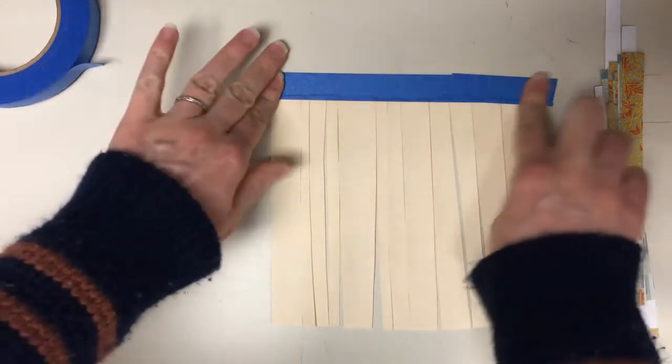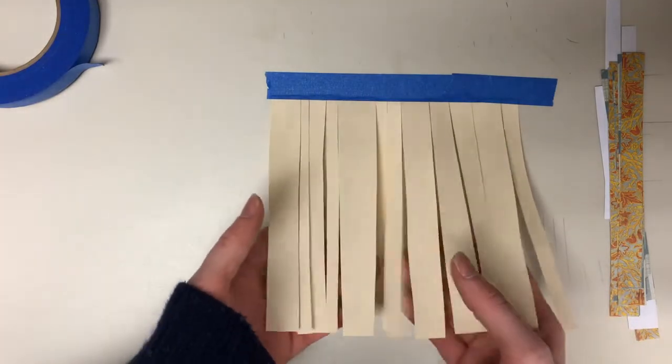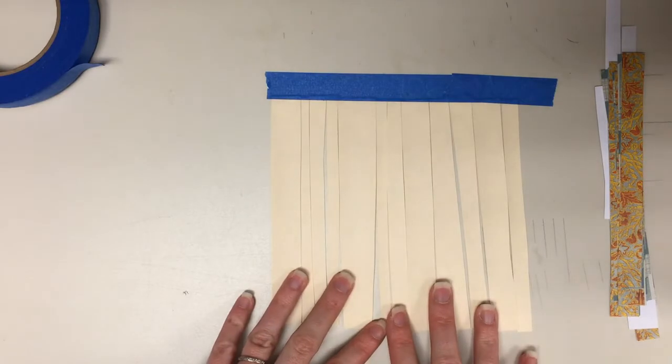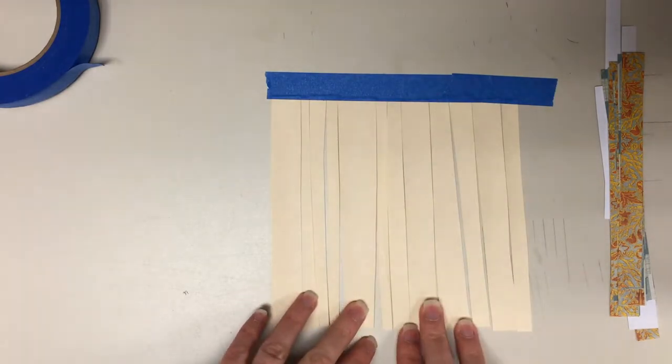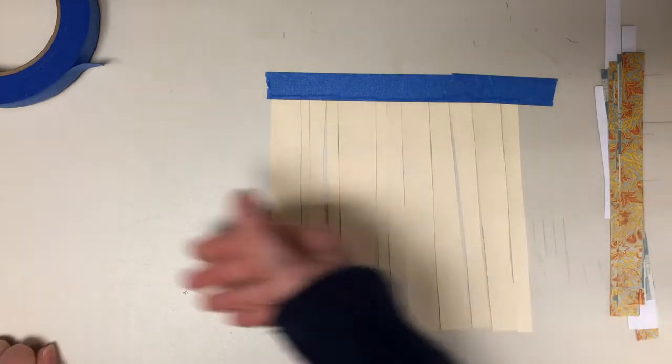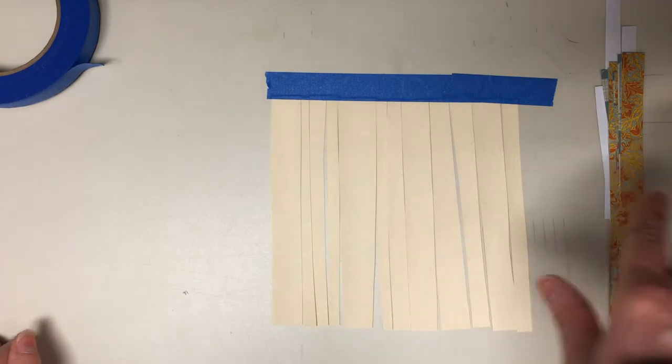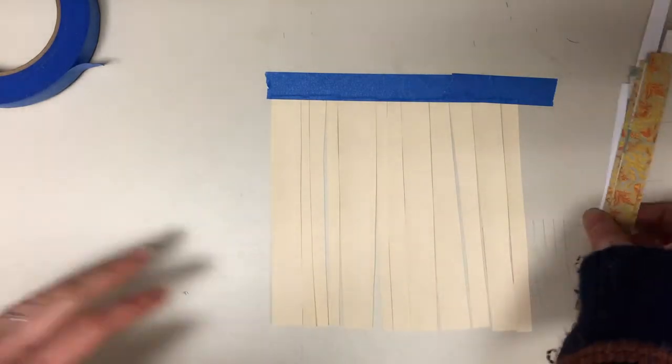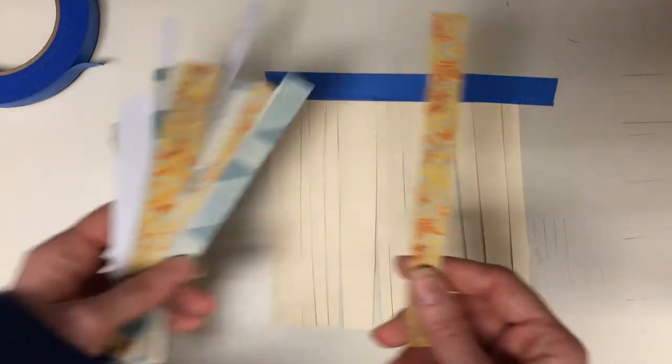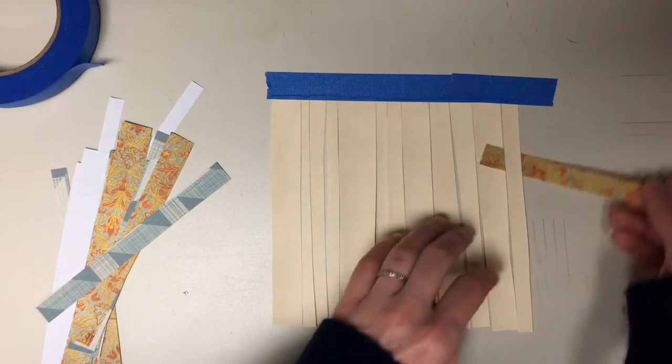All right, there we go. So now all of these vertical strips are called your warps - they are the vertical strands in a weaving. Warp goes up and down, weft goes side to side. I like to think of your weft strips as they go left and right because they're weft. We are going to be working our colored strips as our weft strips. Here we're just going to do a simple plain weave.